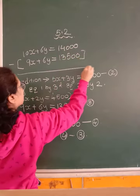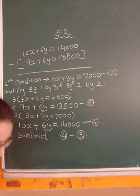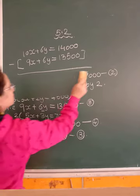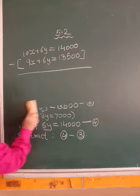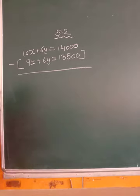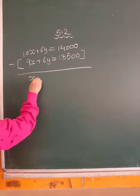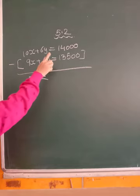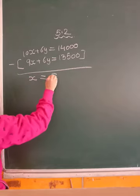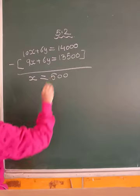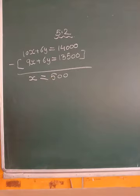Let us carry out this subtraction. What we get is 10x minus 9x is only 1x which will be equal to 14,000 minus 13,500 is only 500. So we got value of x is 500.